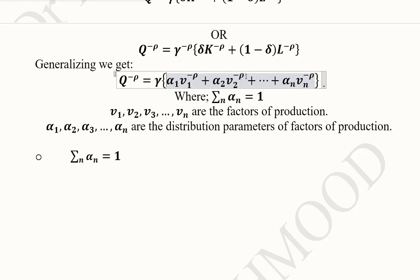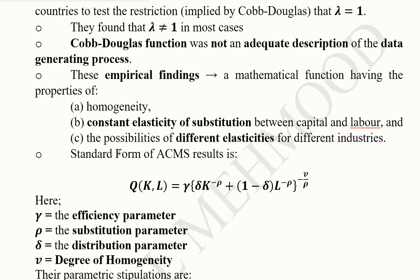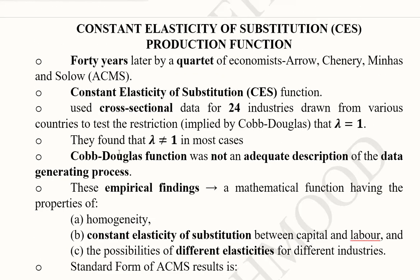The sum of all distribution parameters equals 1 because they represent a complete distribution. This is the general form of the CES production function, the details of which we'll study in upcoming videos.